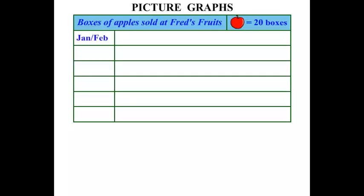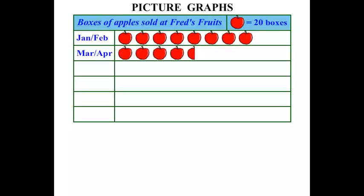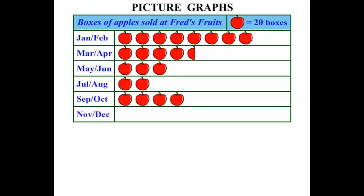In January and February we've got so many apples shown. In March and April a certain amount — one looks like it's been cut off there. May and June, July and August, September-October, and November-December.